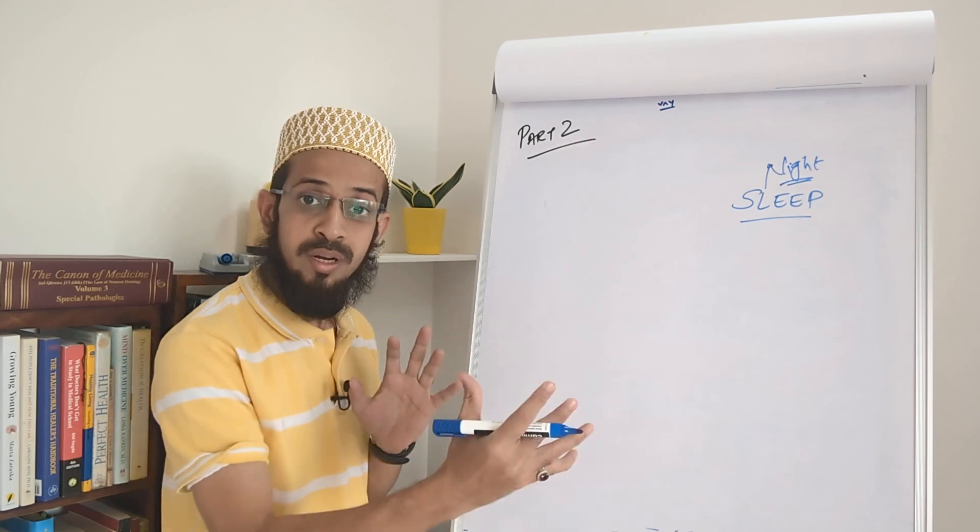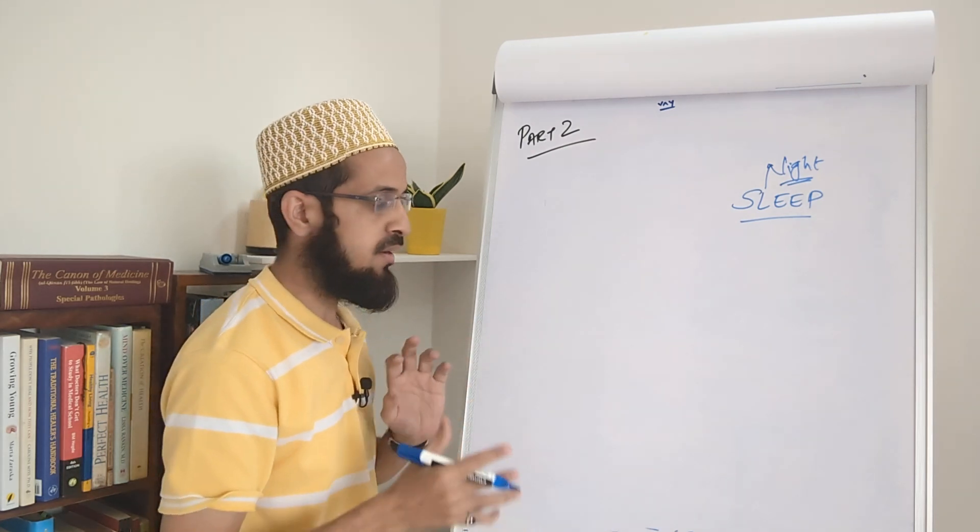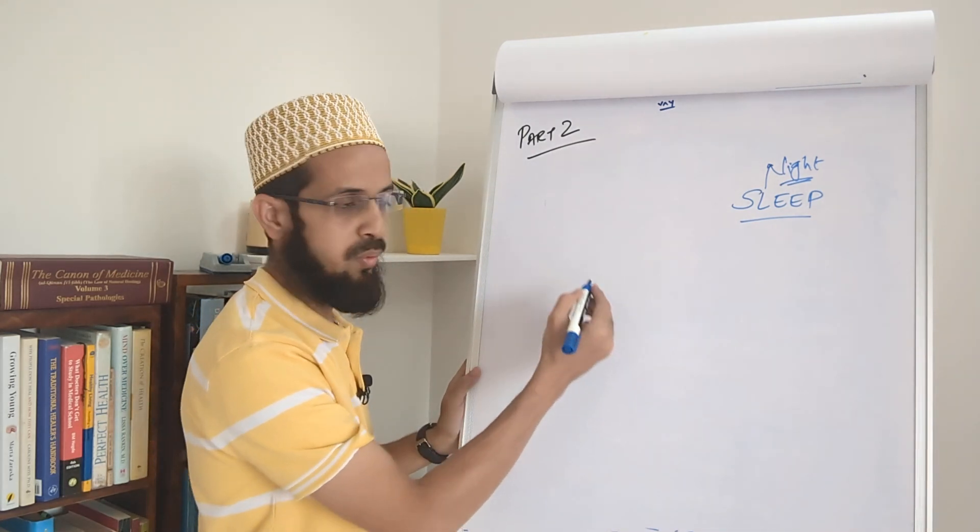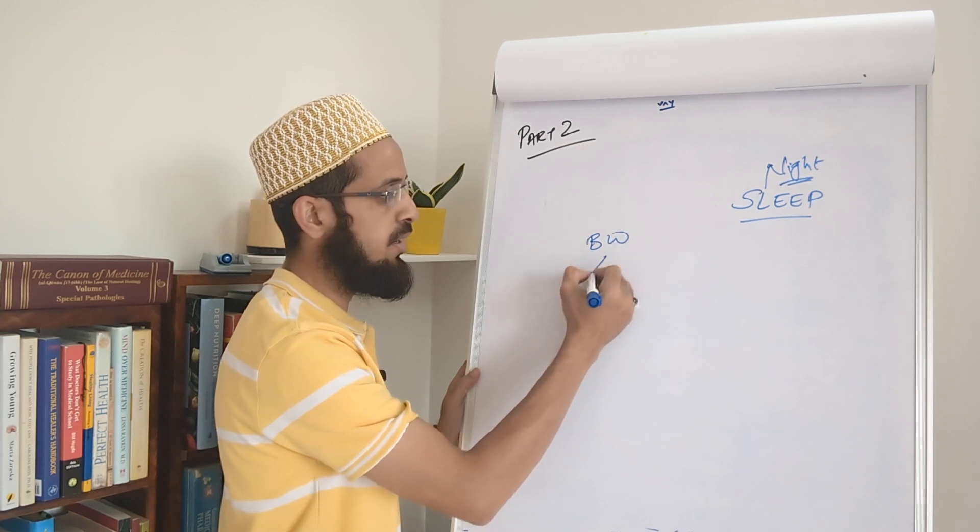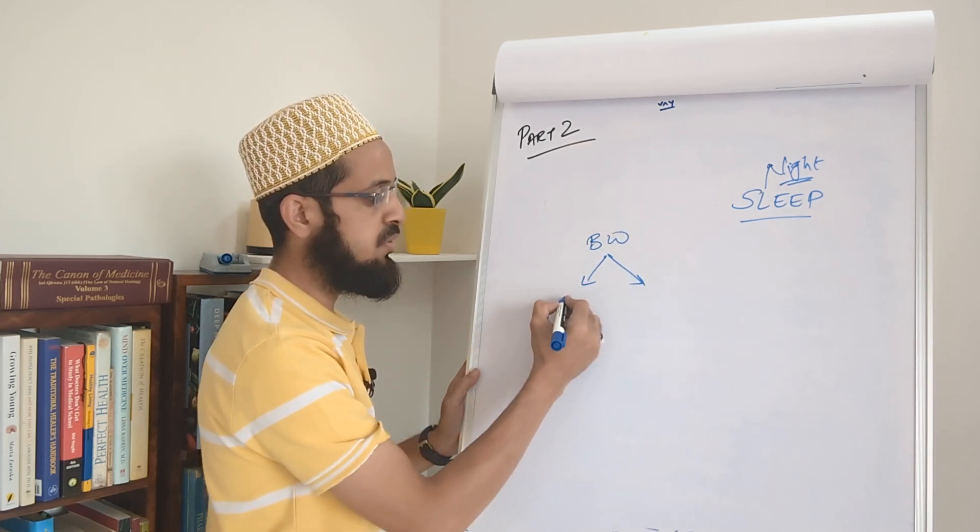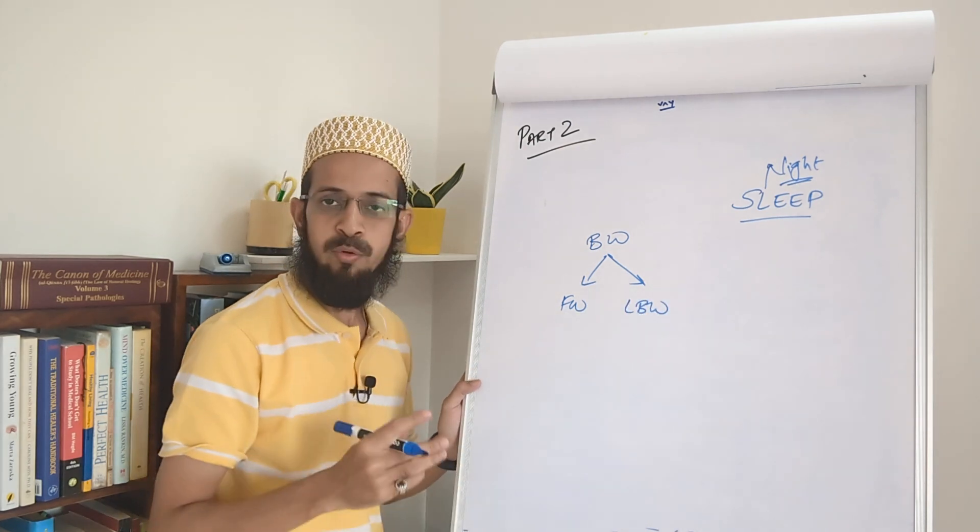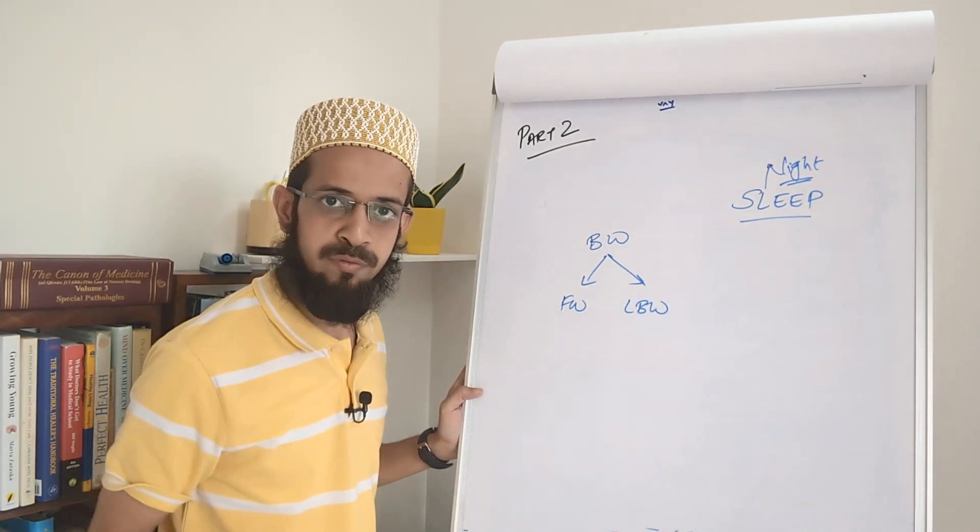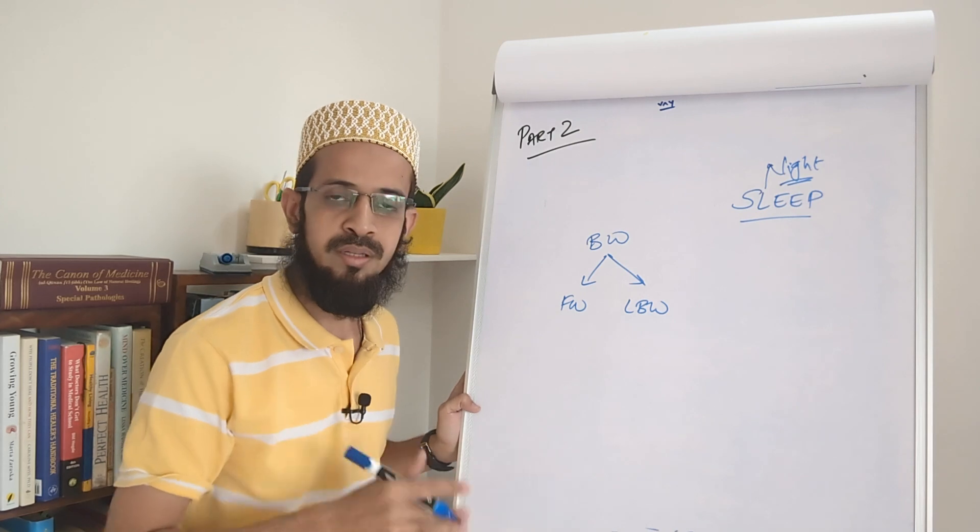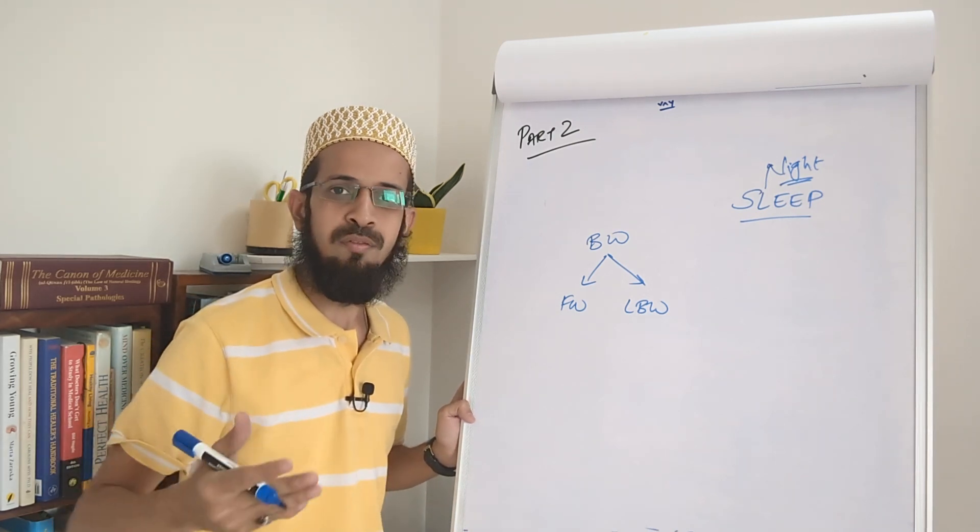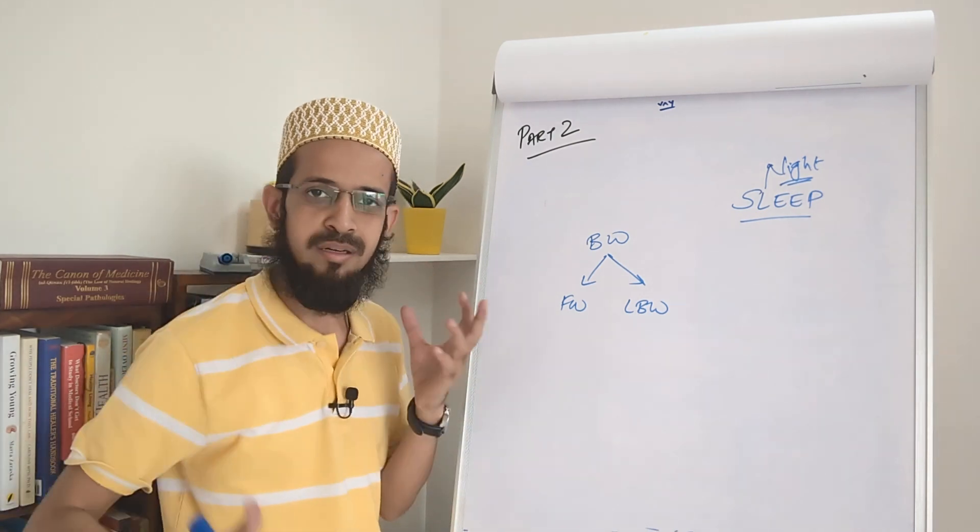To quickly correlate sleep and weight, let's understand that when you are trying to lose weight, which is the body weight, it is divided into two parameters: the fat weight and the lean body weight. Now if a person is not getting adequate amount of sleep - let's say you are sleeping 6 hours or less or you sleep late at 12, 1, 2 - the entire sleeping pattern is out of balance.